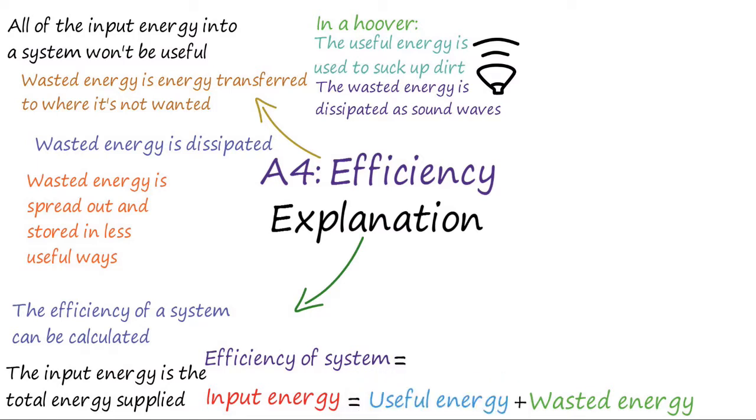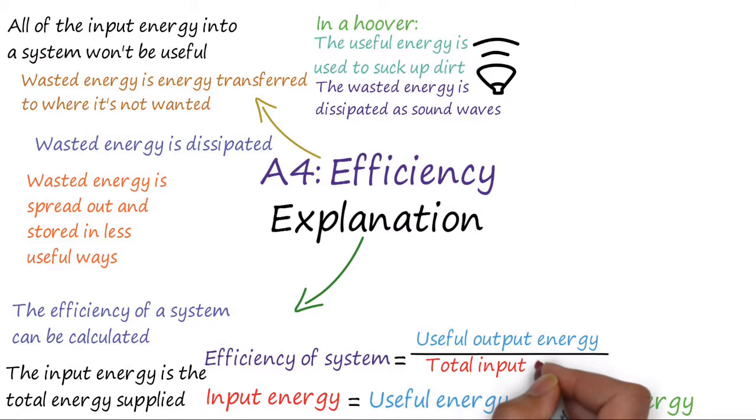The efficiency for any system that transfers energy is calculated by the useful output energy transferred by the device divided by the total input energy supplied to the device. Both are measured in joules, don't forget.